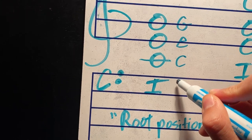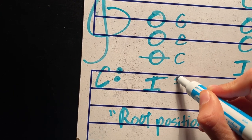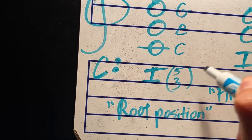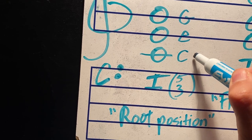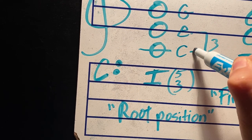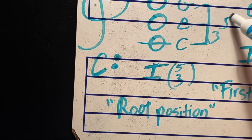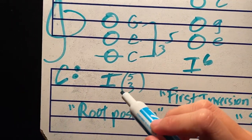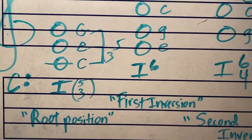Basically, what you don't see here in parentheses is five-three, and that's just basically the distance. So C to E is a third, C to G is a fifth. But you don't really need that. That's kind of implied.